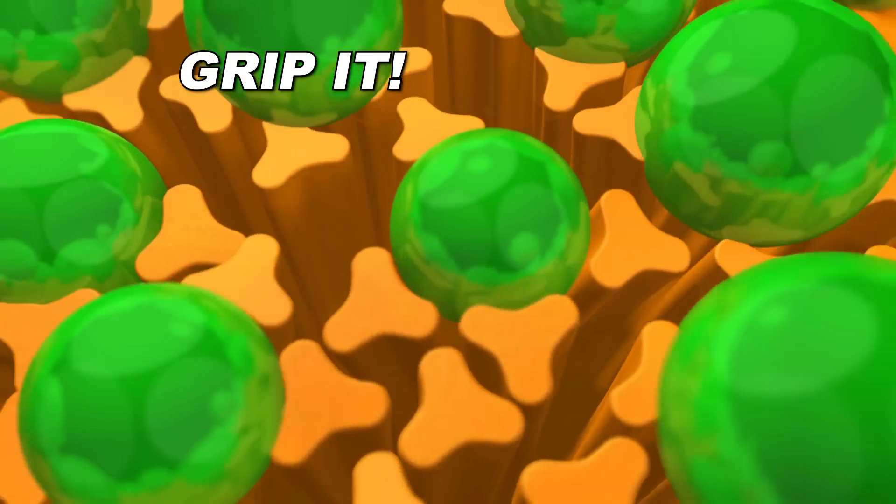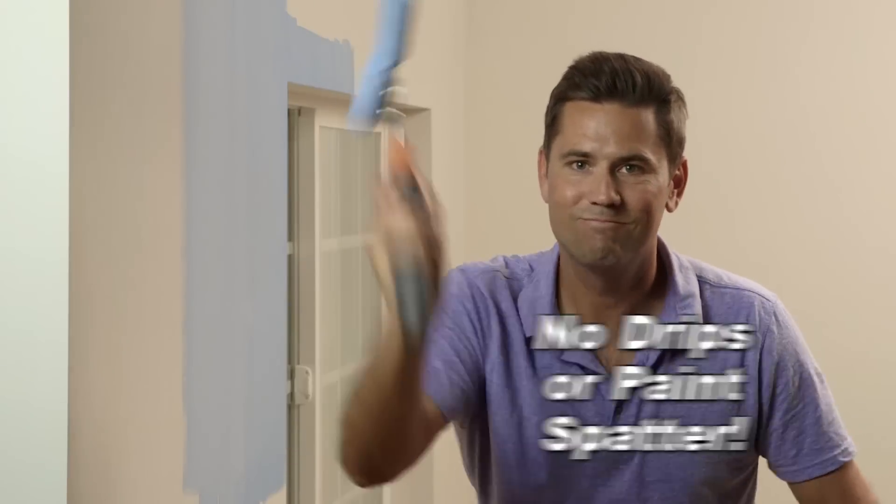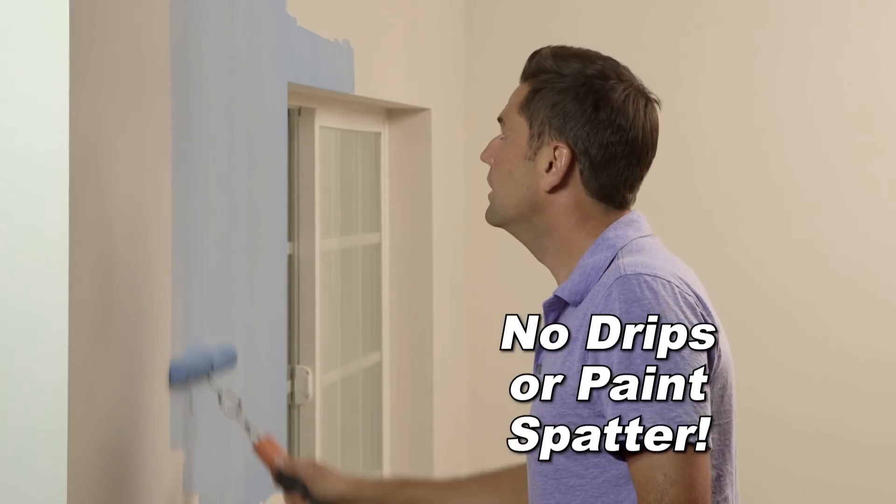The rollers grip it using three-sided super absorbent fibers with hold and lock technology that locks in the paint without dripping or spatter, releasing paint only when it touches a surface.